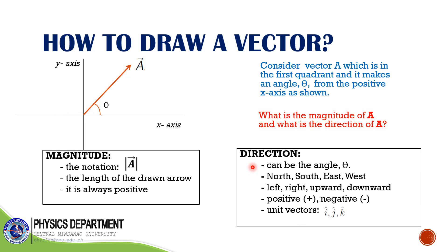For the direction, the direction of this vector can be represented by the angle theta. So theta is the direction of vector A. You can also use north, south, east, west; you can write left, right, upward, and downward; or you can write the direction as positive and negative signs. By convention, positive means to the right, negative means to the left or downward. You can also represent the direction of a vector using unit vectors i-hat, j-hat, and k-hat — I will discuss these later.